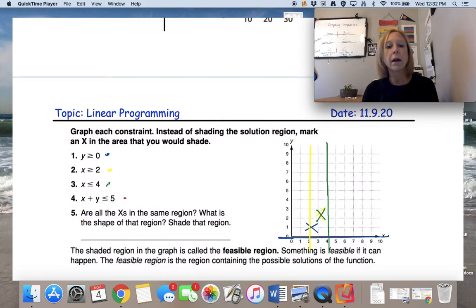And x plus y is less than or equal to 5. I can change this to slope intercept form, or I can use cover-up and see that my intercepts are 5. My x intercept is 5, and my y intercept is 5. So I'm going to plot those two points, draw my line, and it's less than, so I shade below.